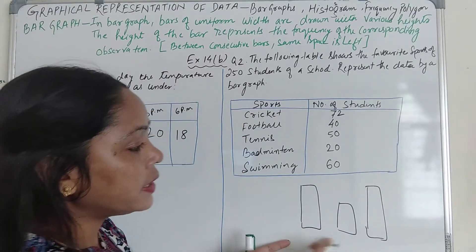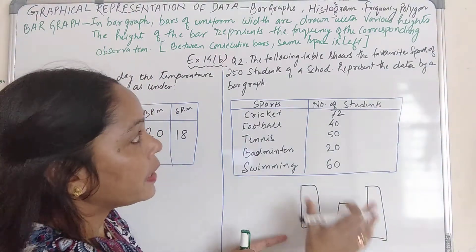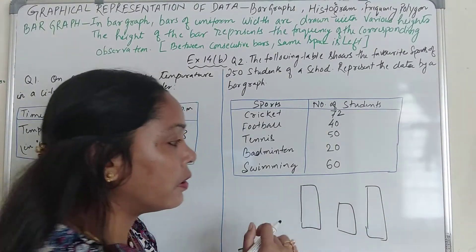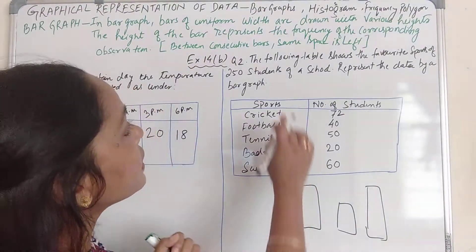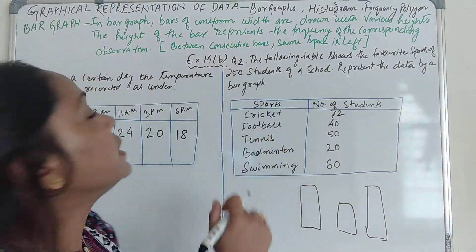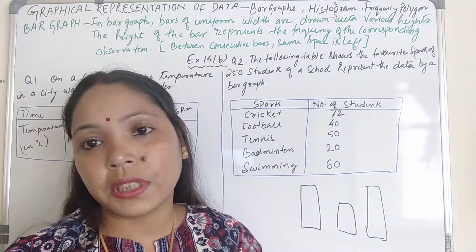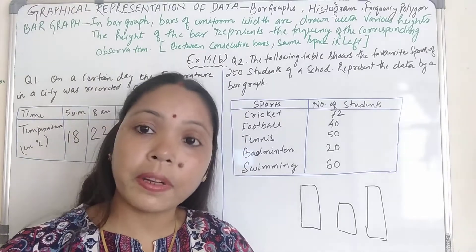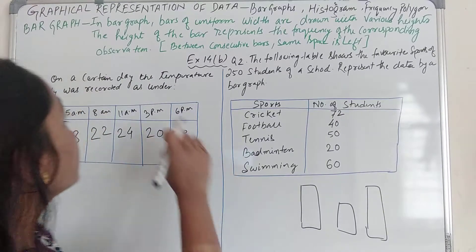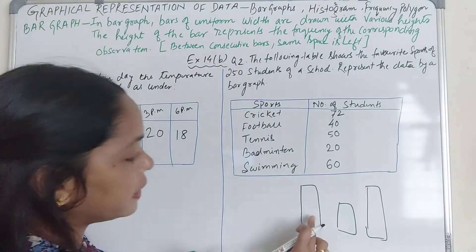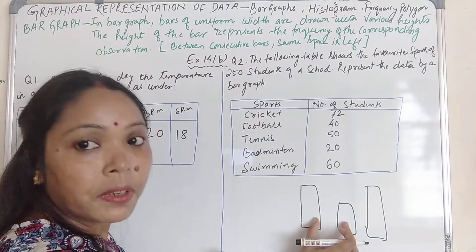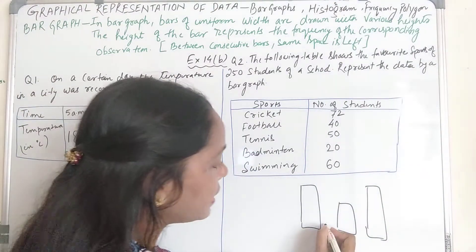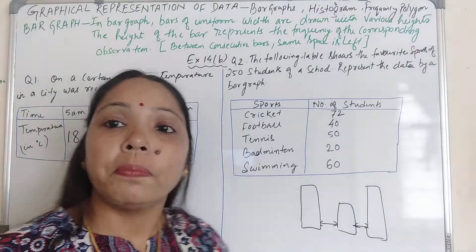I have drawn here three bars. These three bars represent the bar graph. This height, this height, this height — all three heights are different. This height represents the frequency of the corresponding observation. One more important thing: whenever we draw the bar graph, between consecutive bars, the same space is left. This space and this space should be the same.